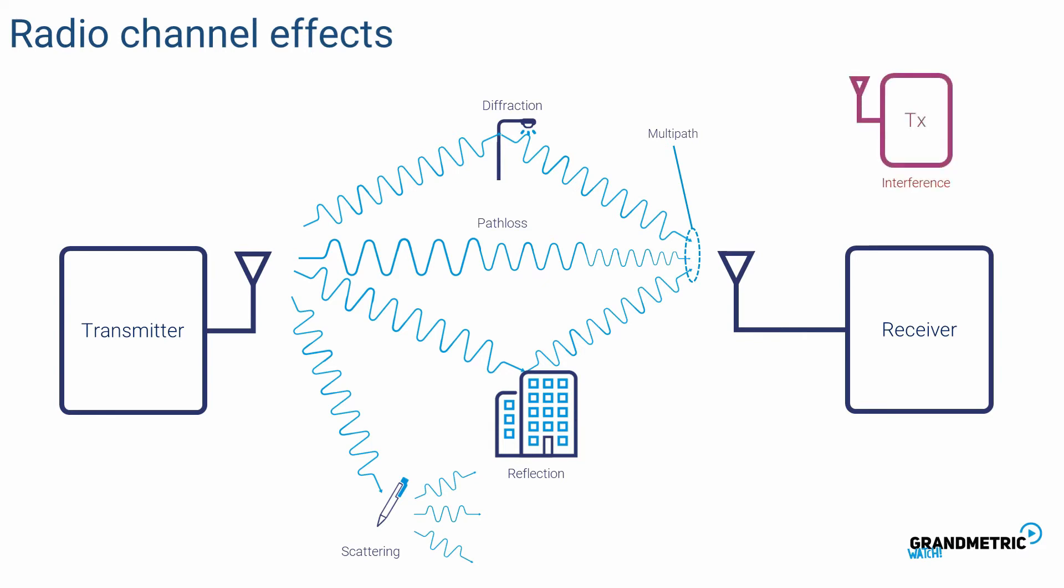But the receiving antenna gathers not only desired signal but also signals transmitted by other devices. Those are called interference. Moreover the receiver itself creates thermal noise which additionally distorts signal. Correct reception of such signal is not a trivial task.